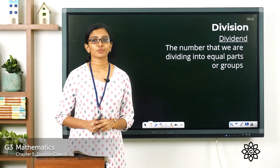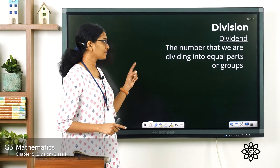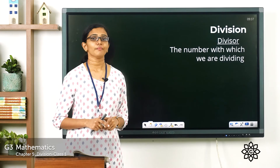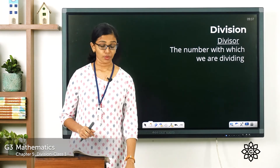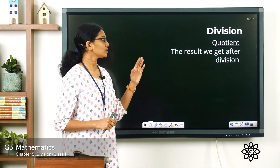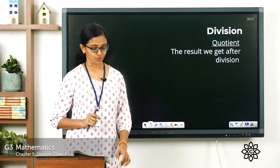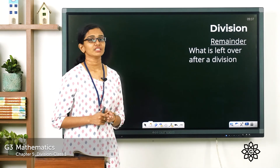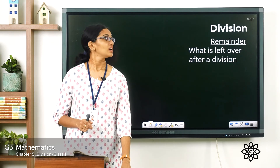Let's revise the terms once again. Dividend is the number that we are dividing into equal parts or groups. The number with which we are dividing is called the divisor. The result we get after division is called the quotient — it shows how many items are in each group. What is left over after the division is called the remainder.